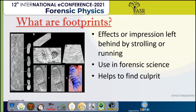Let's discuss what a footprint is. Footprint evidence can be defined as the effect or impression left behind by an individual strolling or running. It helps to build links between crime scenes and also helps to find the type, size, and areas of specific wear on the shoes. Soil trapped in soles can also give useful leads such as soil pH and the presence of pollen grains, which help to find the culprit.